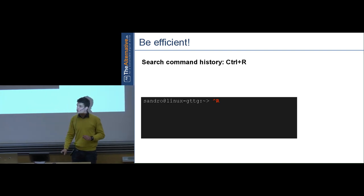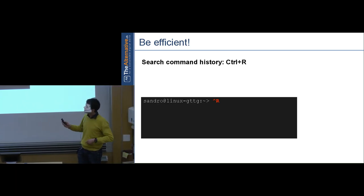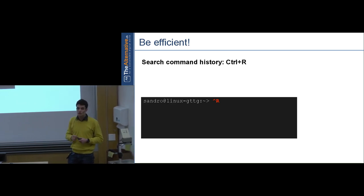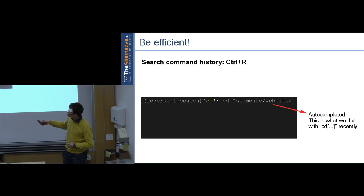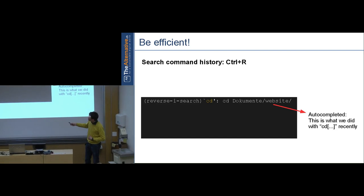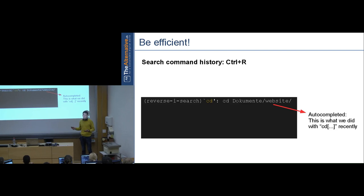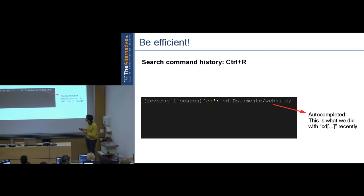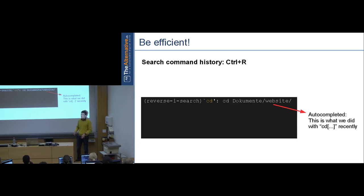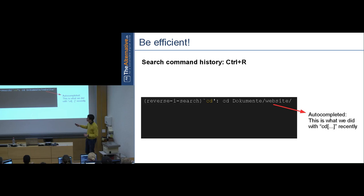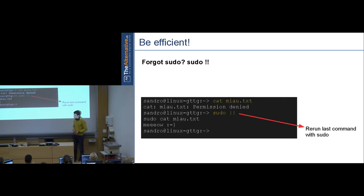There's also Ctrl-R — the hat symbol means Control — for reverse history search. Press Ctrl-R and type a substring of a command you used before; it instantly shows the most recent match. This is great if you typed a complex command two days ago and can't remember it. Press Tab to confirm and it becomes your current line. If no match is found, it says 'failed reverse-i-search'.